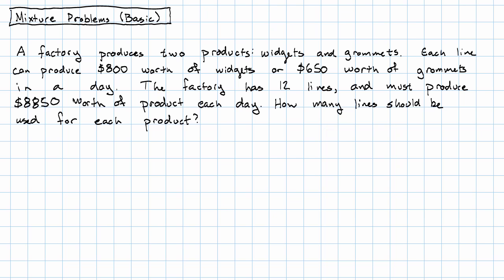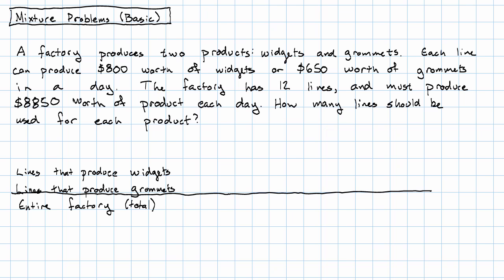In this problem, we have information about the lines that produce widgets, the lines that produce grommets, and the entire factory. The entire factory is going to be the total of the two sorts of lines. What sorts of information do we have?